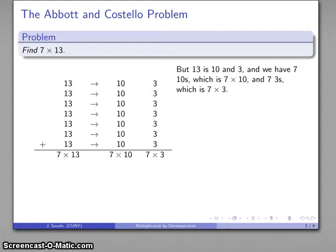And the advantage to this is that I might not know offhand what 7 times 13 is, but I know what 7 times 10 is and I know what 7 times 3 is. And so this is 7 times 10, that's 70, and 21. These two together are 91, so that tells you what 7 times 13 is.